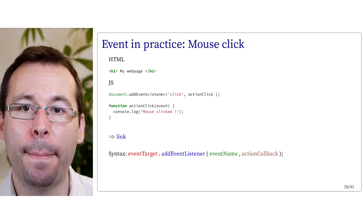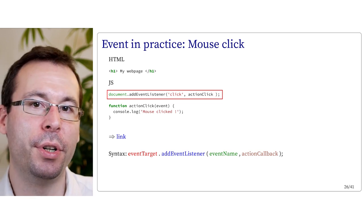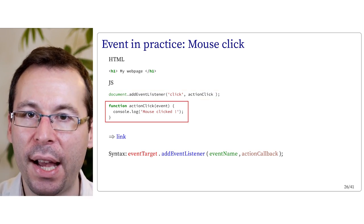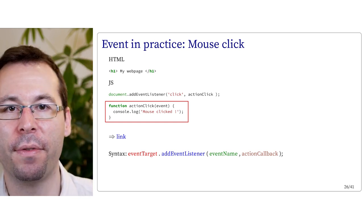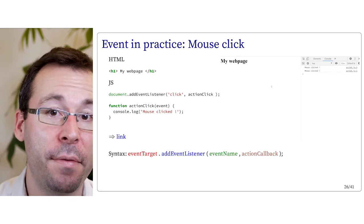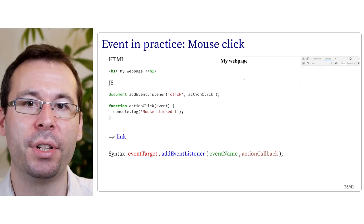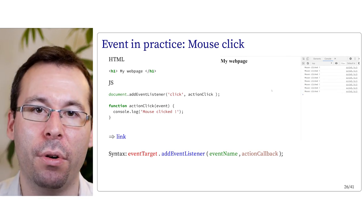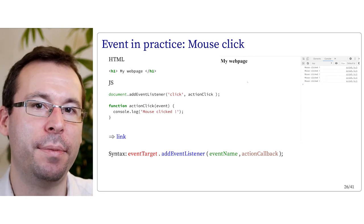Let's see a basic example. We have document.addEventListener with 'click' as a string and actionClick as the callback function name. actionClick is a function that prints 'mouse clicked'. What happens is that every time the user clicks the mouse button anywhere on the document — this is the part document.addEventListener('click') — the function actionClick is called, which means the string 'mouse clicked' is displayed on the console.